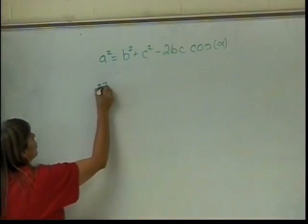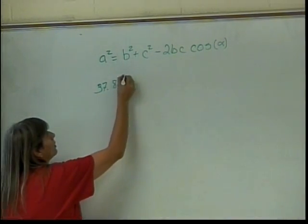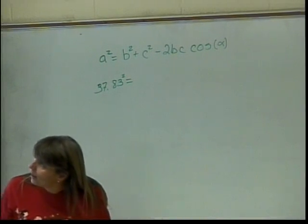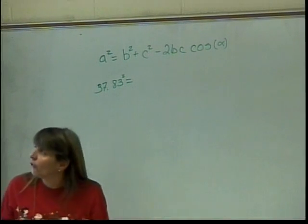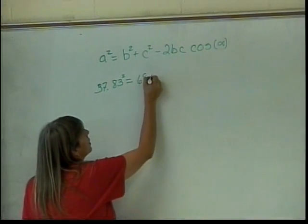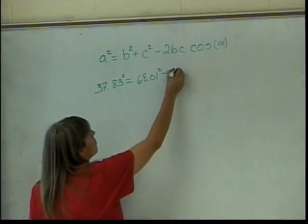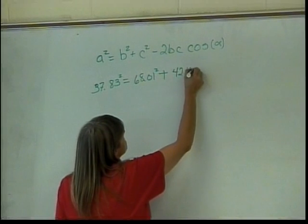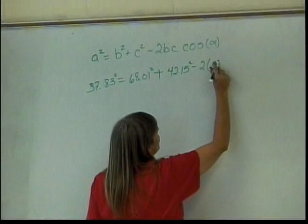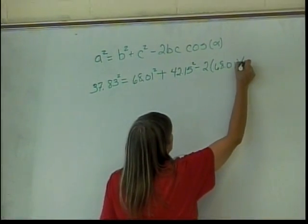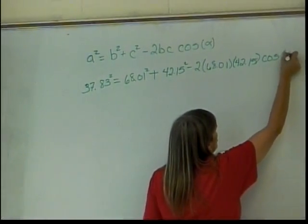So, it's the 37.83 squared equals, and it doesn't matter which one's b or c, right? Just as long as it's one of the other two. So, we'll do 68.01 plus 42.15 squared minus 2 times 68.01 times 42.15 times the cosine of alpha.